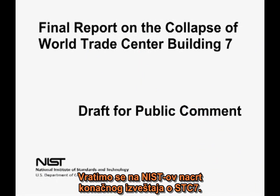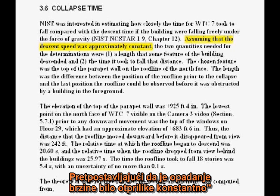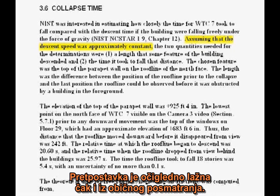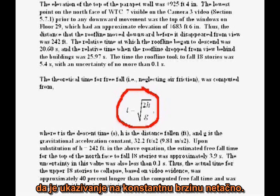Let's return to the NIST final report on WTC 7. On page 40, there is a phrase — quote, 'assuming that the descent speed was approximately constant' — unquote. The assumption is clearly false from even casual observation. However, the fact that they proceed to use a formula for constant acceleration clearly indicates the constant speed reference is a misstatement. They're actually assuming constant acceleration.